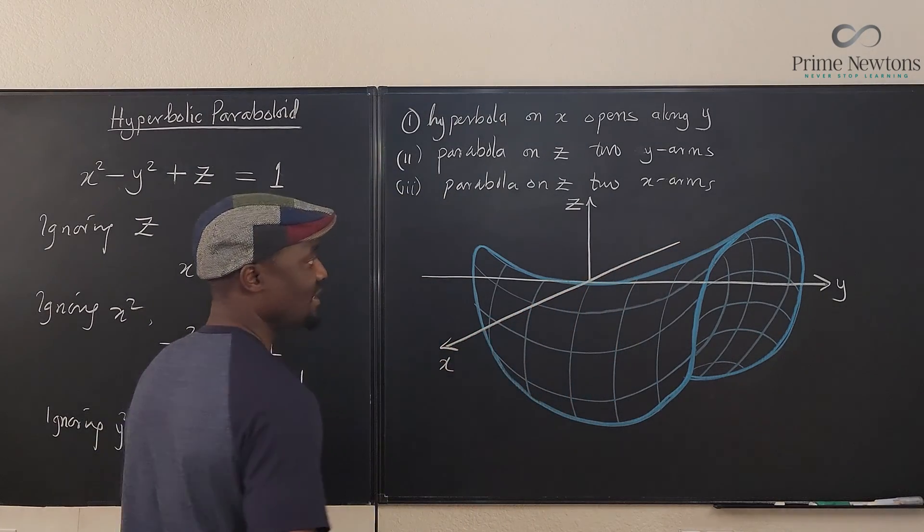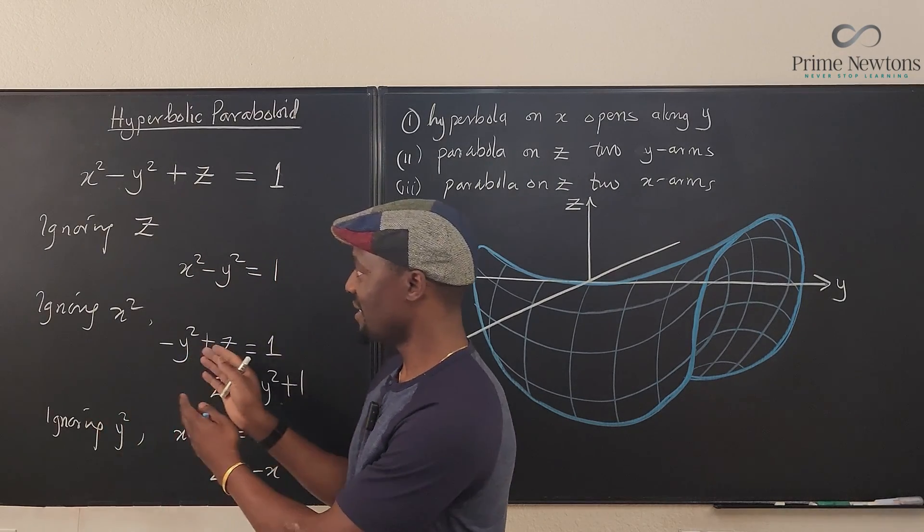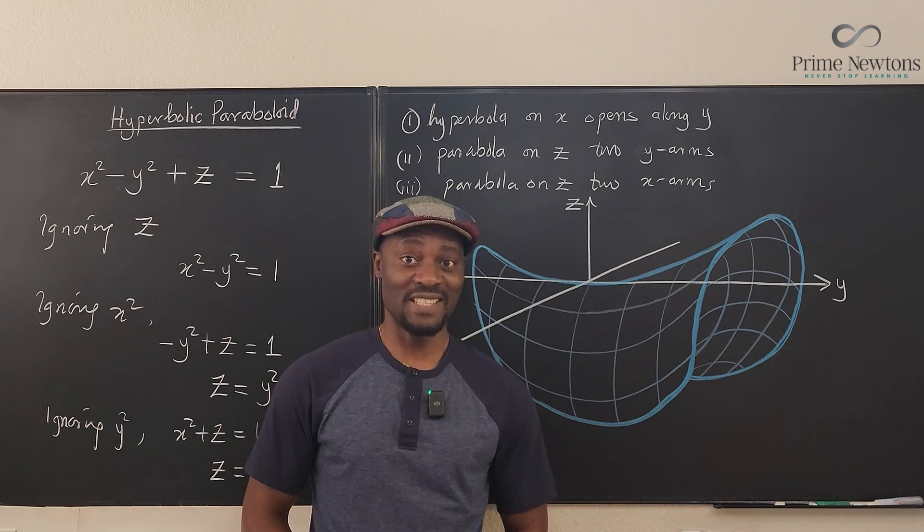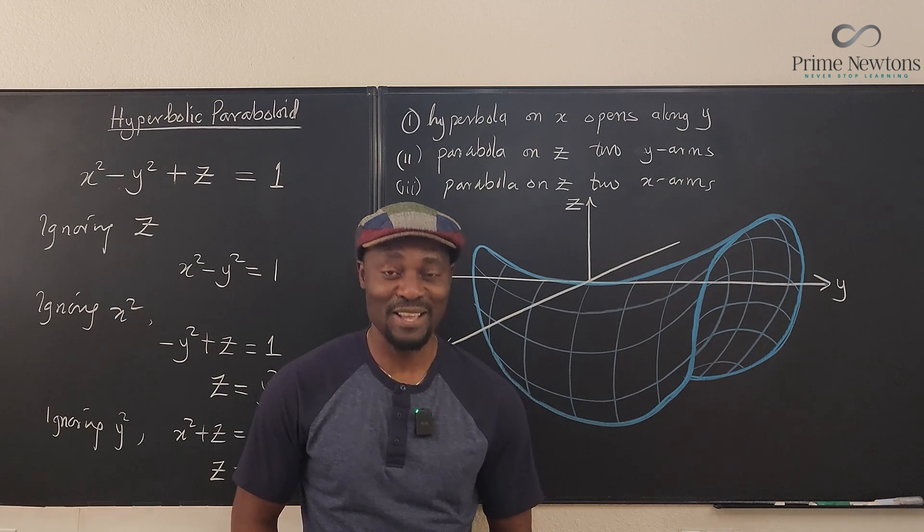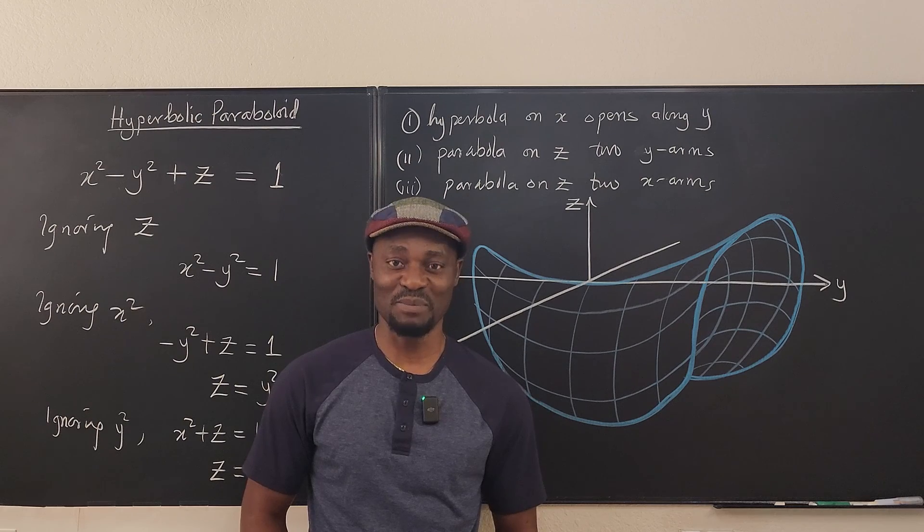And this is x. Ladies and gentlemen, we have sketched this. We have shown you, presented you a piece of Pringles, and it is a saddle. It's a hyperbolic parabola. Never stop learning. Those who self-learning have stopped living. Bye-bye.